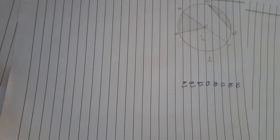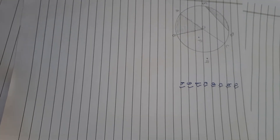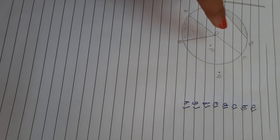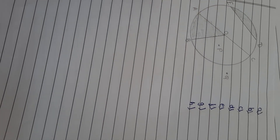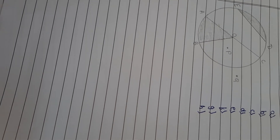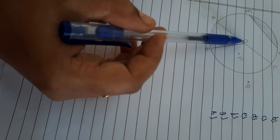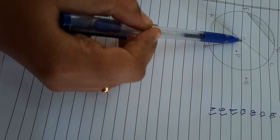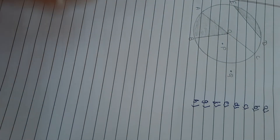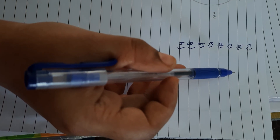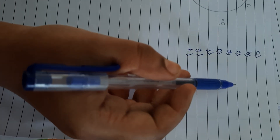I will show you the diagram children. Here is your first question — from the figure, identify. They have given a figure like this, which is already in your textbook. The first question asks: the center of the circle — where is it? This is the center of the circle. What is the name? O. So write: O is the center of the circle.